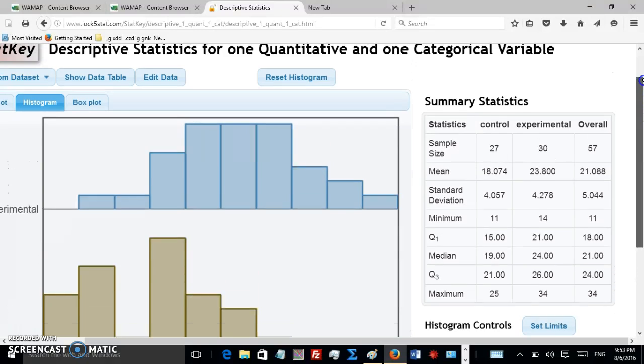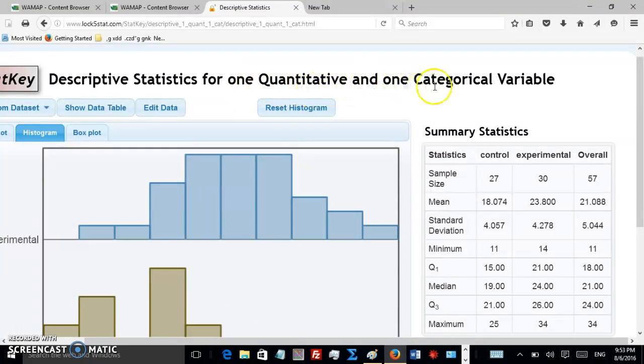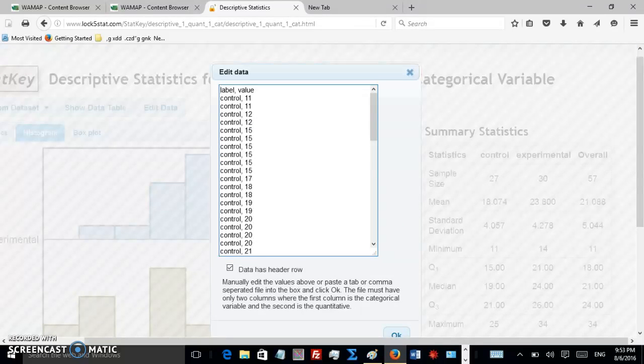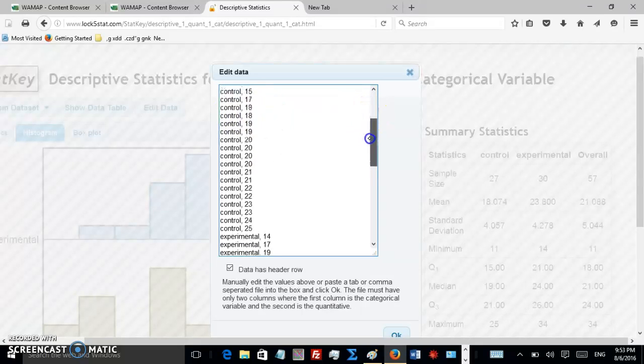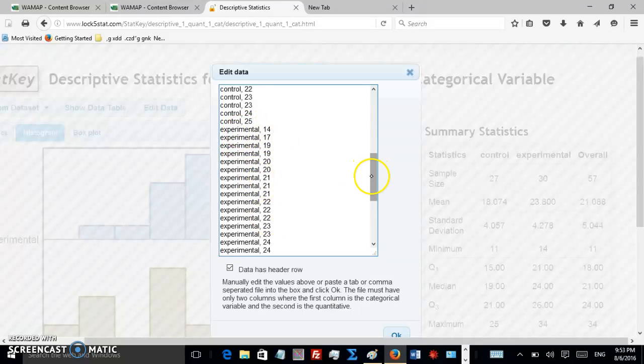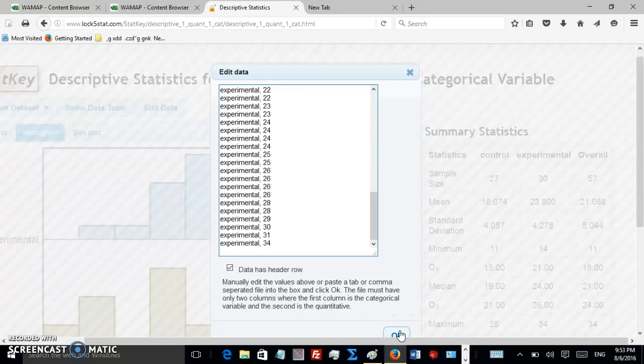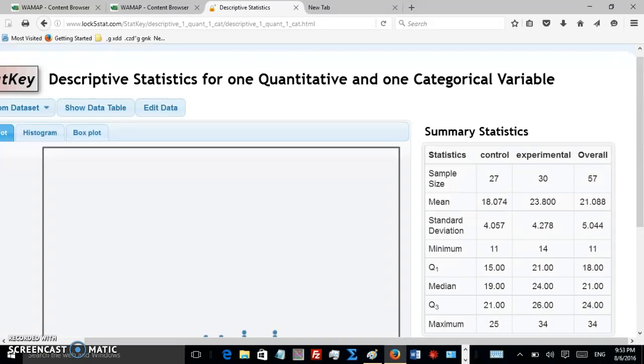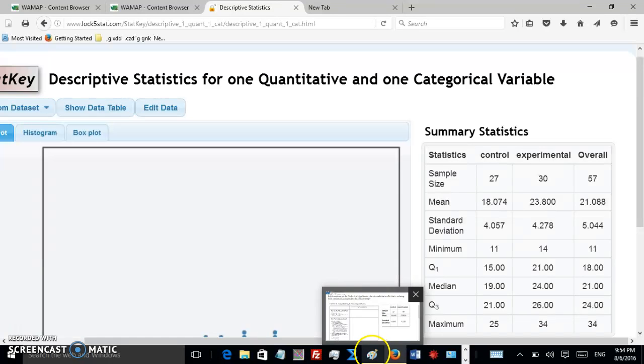The control group sample size, mean, etc. Experimental group sample size, mean, standard deviation. One thing I want to point out if you decide to use Lock5Stats: click on where it says Descriptive Statistics for One Quantitative and One Categorical Variable. And then if you copy and paste the data, when you go to Edit Data, you have to do some rearranging. Because the only way Lock5Stats will accept the data is you have each row for each individual. You have to say whether they're in the control group or the experimental group and then what the value was. This is called stacked data. If you find that complicated, you can also get your statistics by just using Excel or by calculating the normal one variable. Either way works fine.